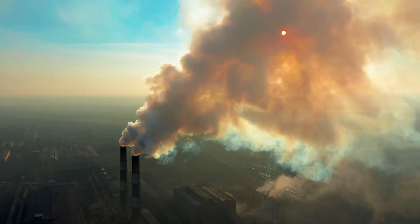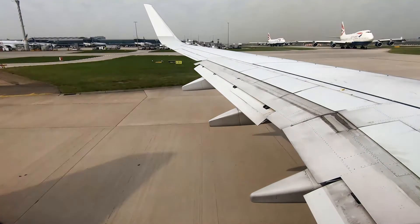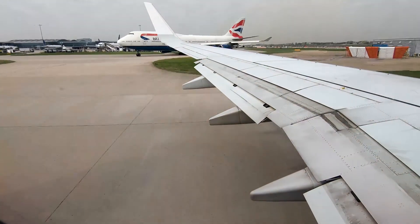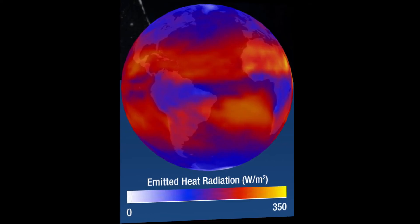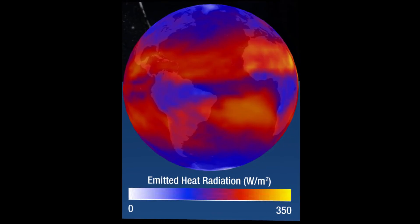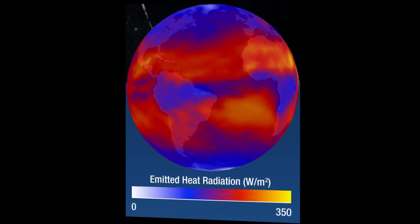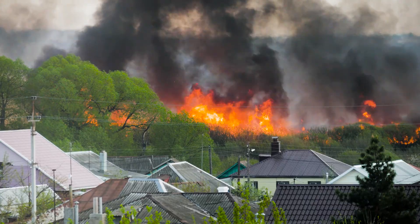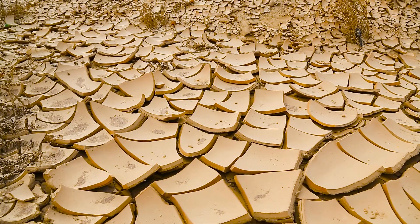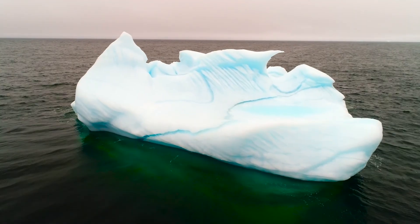Greenhouse gases include water vapour, carbon dioxide, methane and nitrous oxide. In the last couple of centuries humans have increased the greenhouse gases in the atmosphere, enhancing the greenhouse effect and leading to a greater amount of heat being absorbed by the atmosphere. The top of the earth's atmosphere looks colder from space as less heat passes up through the atmosphere. There's compelling evidence that most of the recent climate change is caused by greenhouse gases which have been released into the atmosphere by humans.